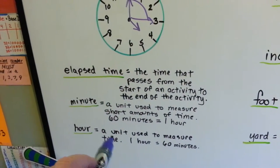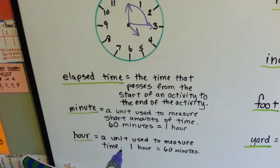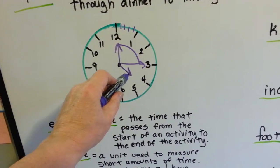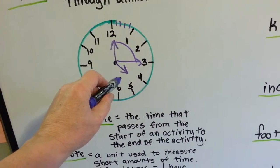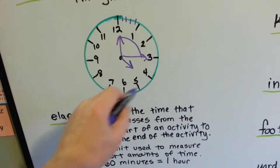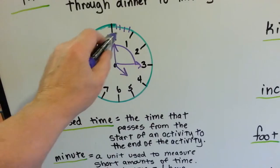An hour is a unit used to measure time. One hour is 60 minutes. The hour hand will move from the 5 to the 6, that's one hour. From the 6 to the 7 is another hour, like that. And then the minute hand will go around one full time each hour.